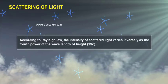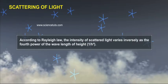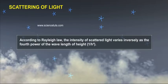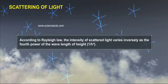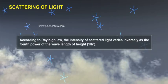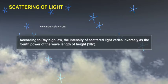According to Rayleigh's Law, the intensity of scattered light varies inversely as the fourth power of the wavelength of light: 1 by lambda to the power of 4.